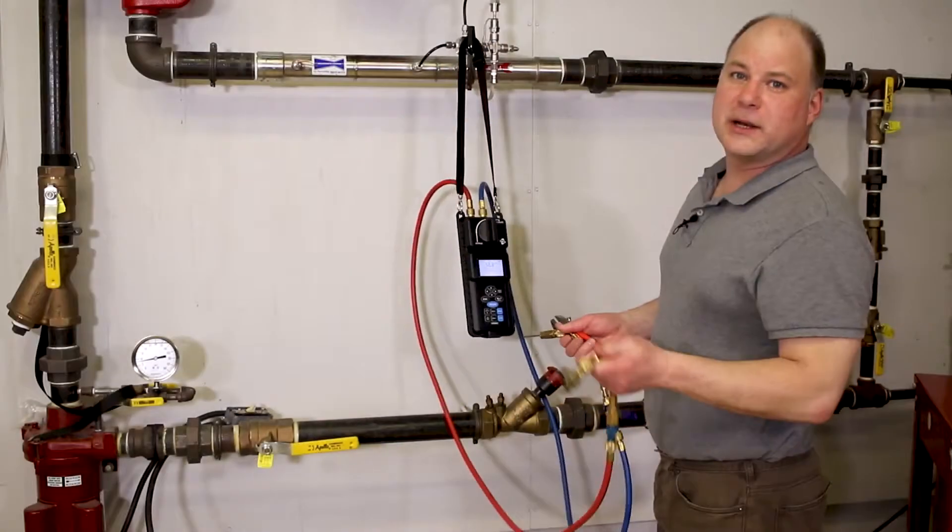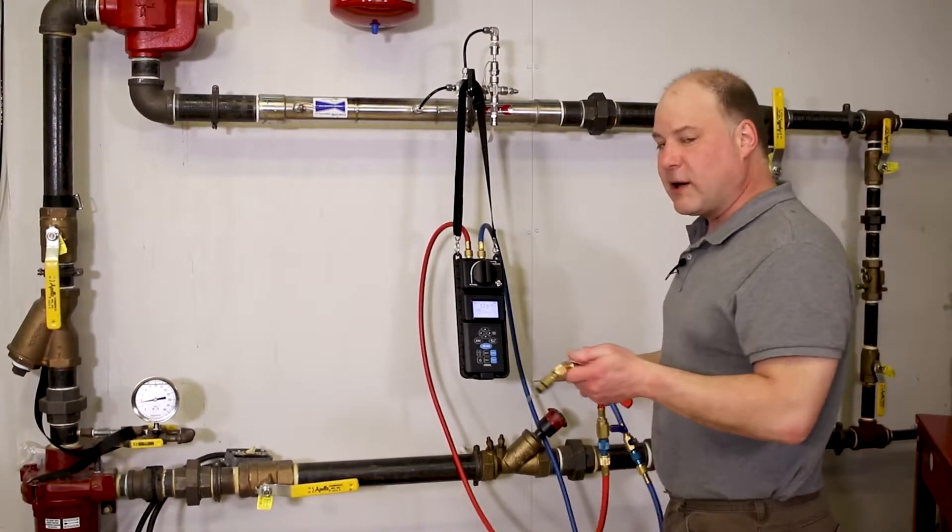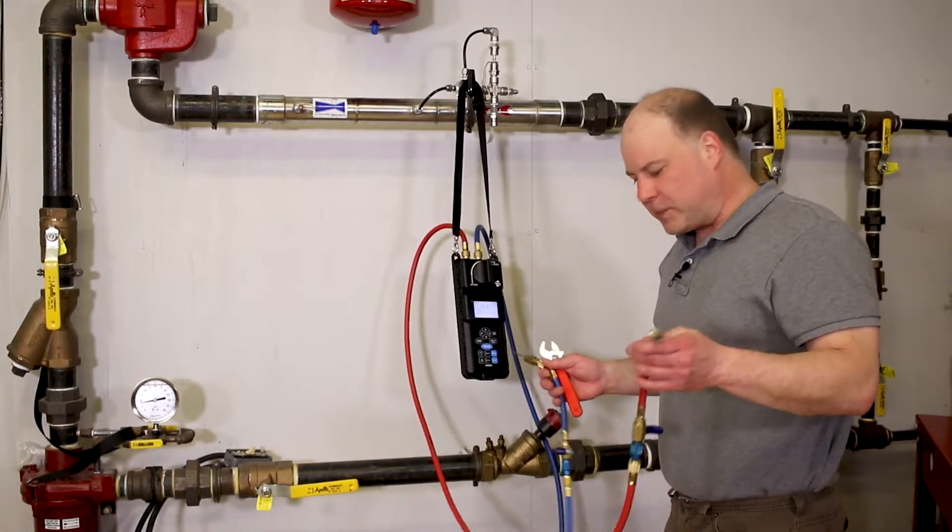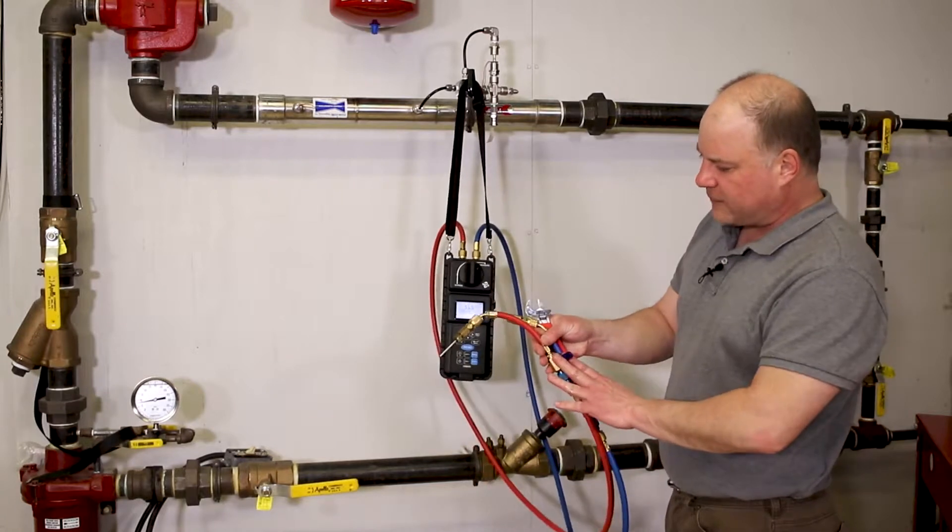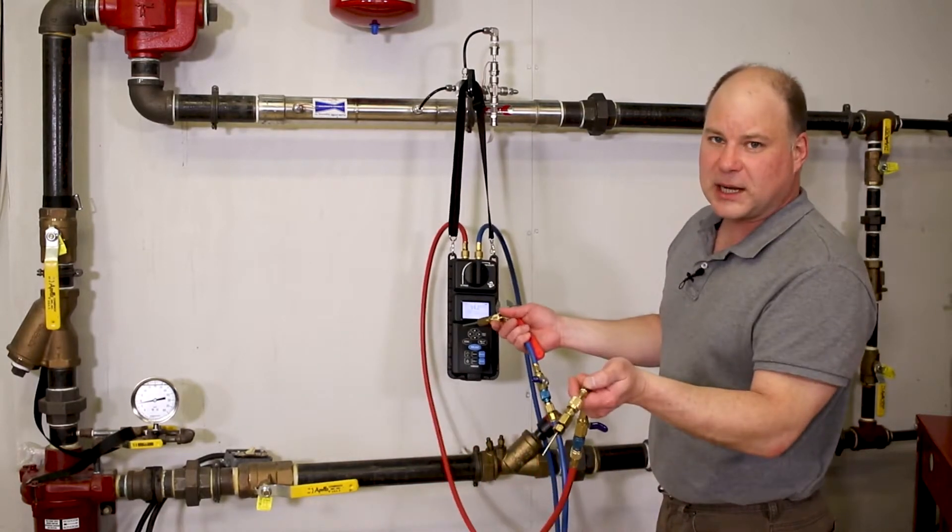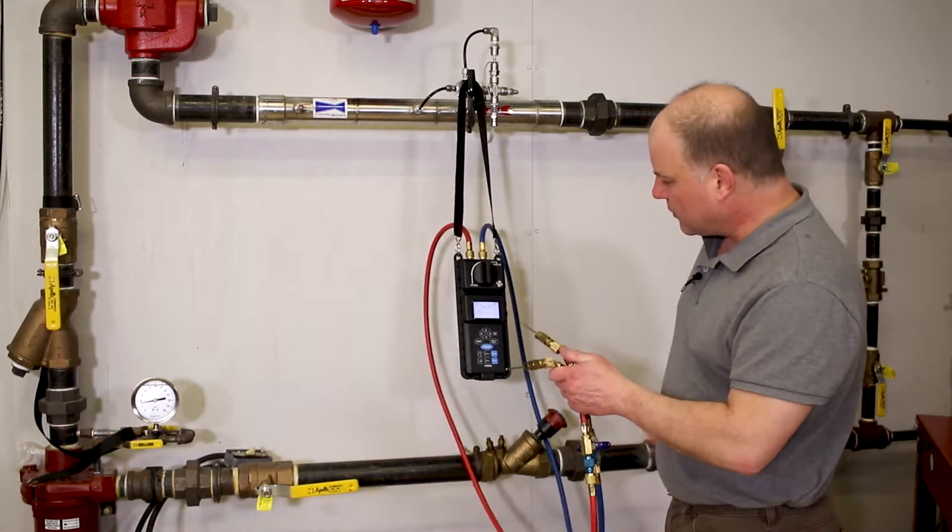Now we can go to another valve and repeat the measurement process. However, since we've already bled the hoses of air, there's no need to repeat that process. When we put the valves in the off position, there's a slight vacuum holding the water in here, so we shouldn't see any air inadvertently get into the hose lines.